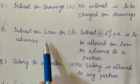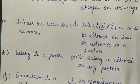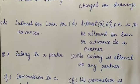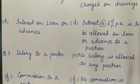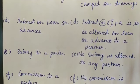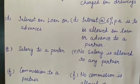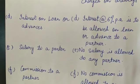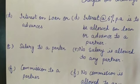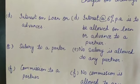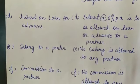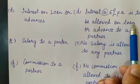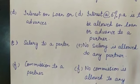Next point is interest on loan or advances. Capital to ilawah agar koi partner firm no koi advance provide kardha hai, then the amount should be treated as a loan. And firm, partner no loan de amount te agreed rate naal interest pay kardhi hai. Suppose Mr. A nai firm nai Rs. 10,000 as a loan provide kittai, tad partnership deed naal interest pay kita janda hai.